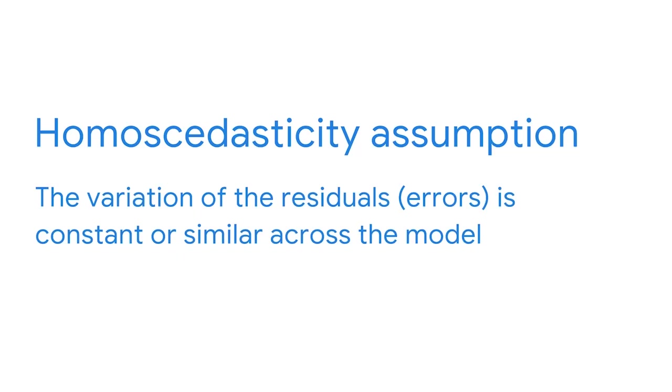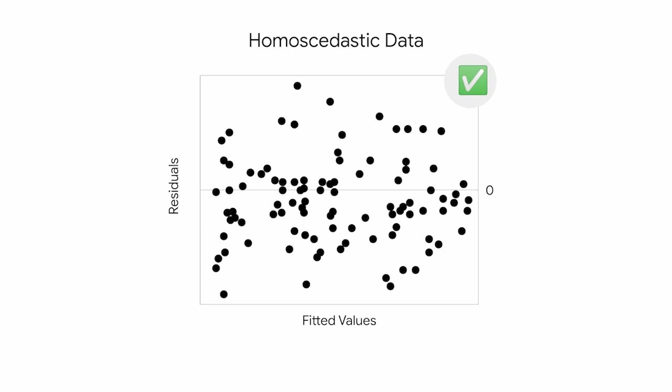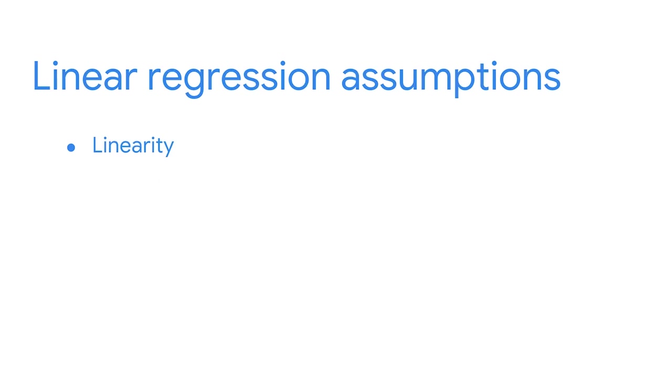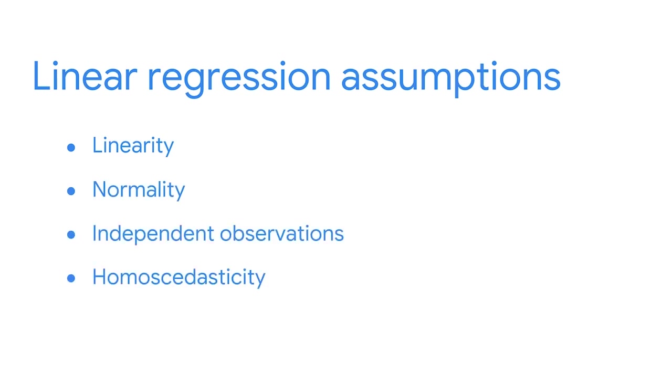Last but not least, the homoscedasticity assumption is fourth on the list. Homoscedasticity means having the same scatter. Returning to the scatter plot of fitted values versus residuals, there should be constant variance along the values of the dependent variable. This assumption is true if you notice no clear pattern in the scatter plot — sometimes described as a random cloud of data points. For example, if you observe a cone-shaped pattern, then the assumption is invalid. Linearity, normality, independent observations, and homoscedasticity are the four assumptions of a simple linear regression. Data analysis is an iterative process — you can go back to these concepts, check to see how the assumptions align with your data, and then move forward with the regression process.